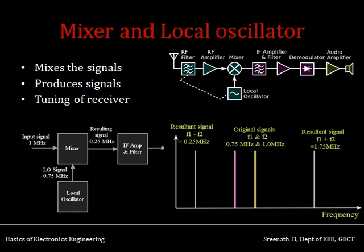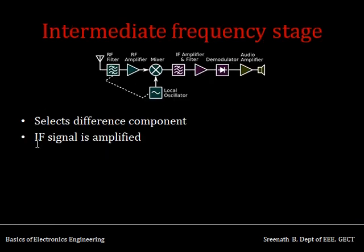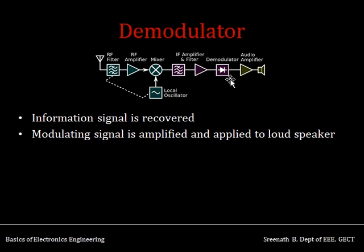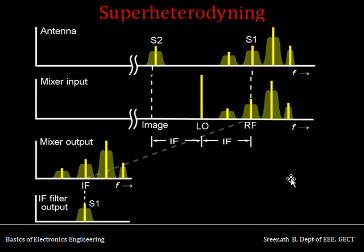At the intermediate frequency stage, the difference component is selected and all other components are removed. This signal is amplified and sent to the demodulator. The demodulator is the stage where the information signal is recovered — you still have the information signal embedded in the intermediate frequency signal and must extract it. The recovered modulating signal or message signal is then amplified and applied to the loudspeaker.